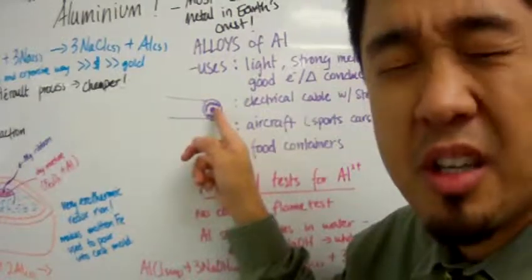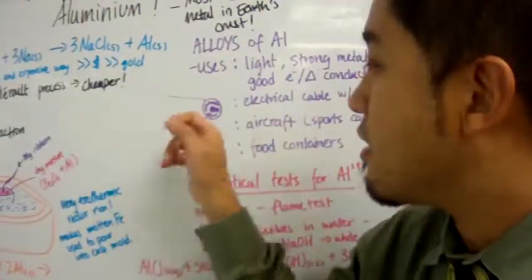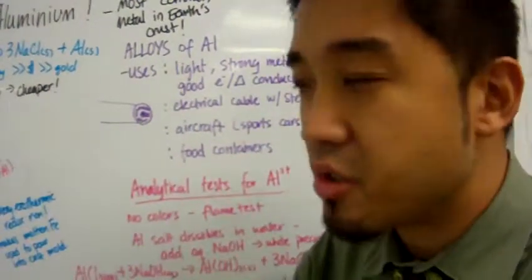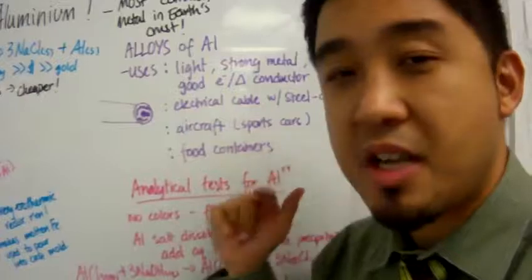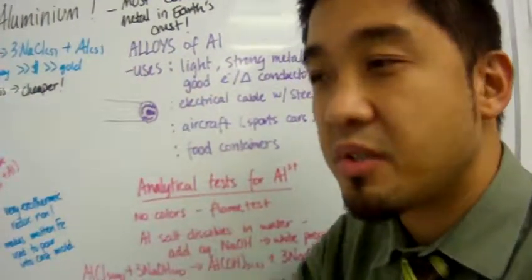The steel core is to prevent extreme sagging of the high wire cable. Aluminum alloys are also used in aircraft, in sports car engines, and as food containers. Why? Because of the corrosive nature of aluminum.